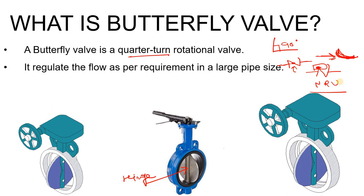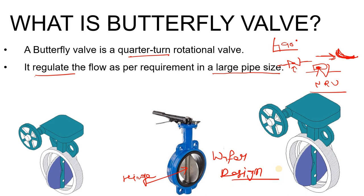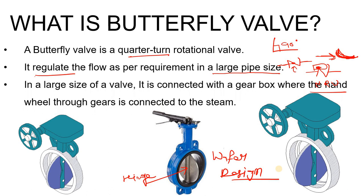The butterfly valve is used to regulate flow as per requirement in large pipeline sizes. We use it in large pipelines because of its wafer design — it is thin, occupies less space, and is less in weight. That is why we mainly use it in cooling water headers. For example, in a urea plant, the cooling water inlet or outlet pipeline will have butterfly valves.